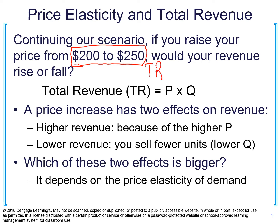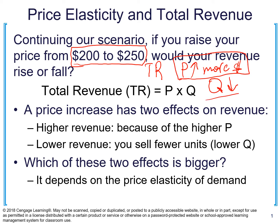From one point of view, when you increase the price of the product you get more money for each unit you're selling. But based on the law of demand, you're going to sell fewer units — quantity demanded is going to be less. So the question is: will you still get higher revenue, or because you're selling fewer units will your revenue go down? The answer really depends on elasticity.